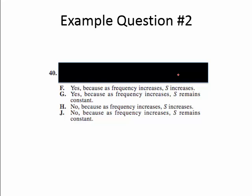Let's take a look at one more example — number 40 from that same free preparing for the ACT guide. Again, I'm covering up the question because we don't want to worry about it at first. We just want to look at the rationale in the answer choices. Our two options are: because as frequency increases, S increases; or because as frequency increases, S remains constant. These are mixed and matched between the yeses and noes. You might ask what S is — I'll tell you in a minute — but it really doesn't matter for this step. All we need to do is find S on the graph.